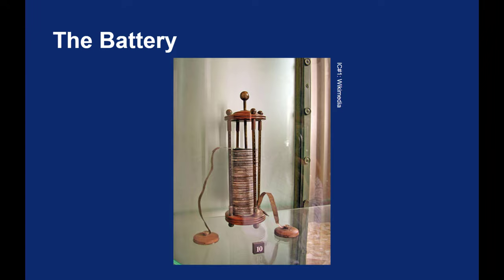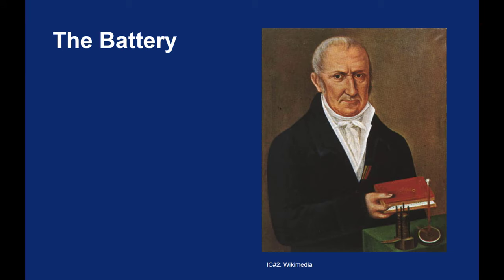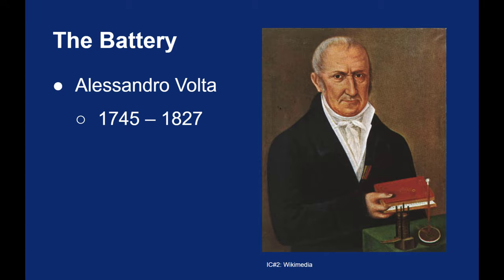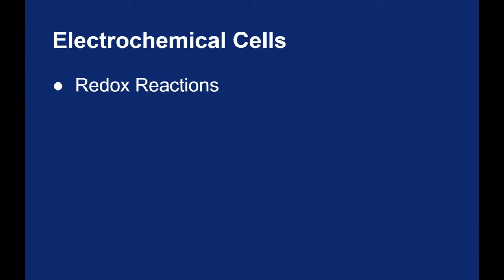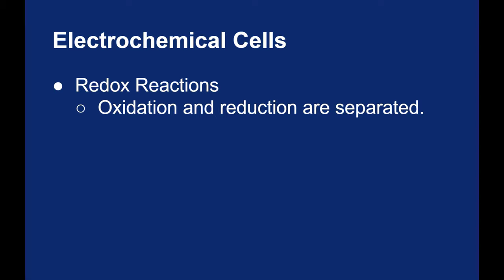This battery in this image is also referred to as a voltaic pile. The voltaic pile is named after Alessandro Volta. The unit of volts are also named after Alessandro Volta. Now what Volta did is he took advantage of some electrochemical cells, some redox reactions. The key is that the oxidation and reduction were separated into two different regions of his battery, of his electrochemical cell.